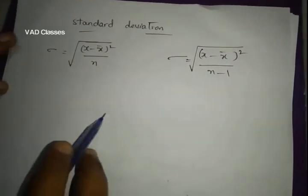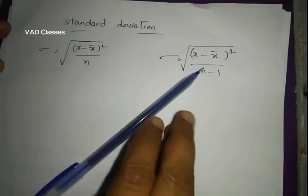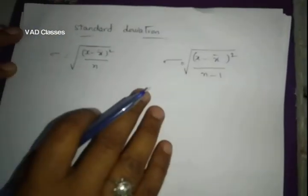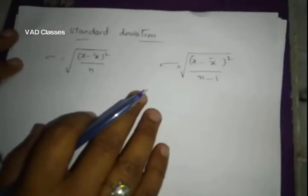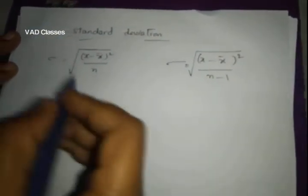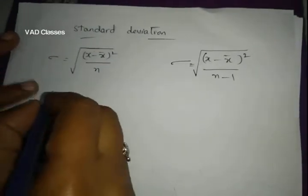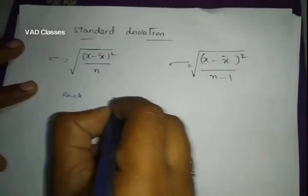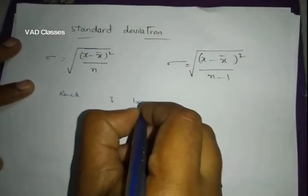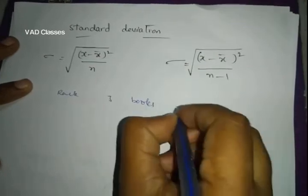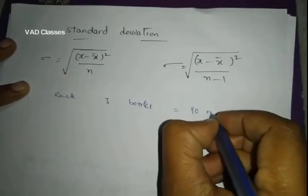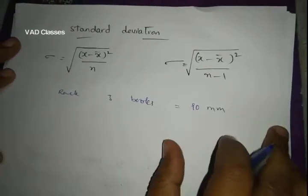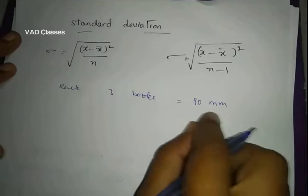What do we need to do? If you were to do this test, I'm going to talk about three books. I will show you a measurement of 90 mm.